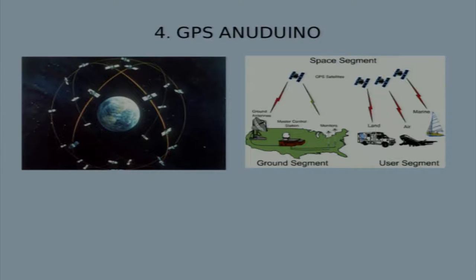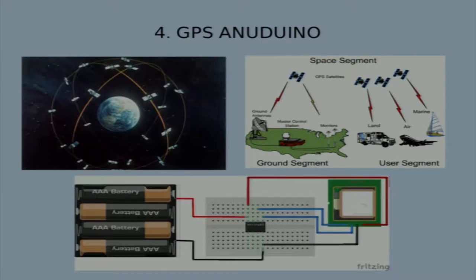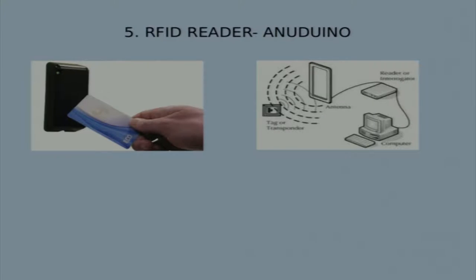GPS stands for Global Positioning System. GPS modules are used everywhere for navigation, distance measurements, and vehicle tracking. We tried to obtain the values of longitudes, latitudes, and place names, and display them using a Bluetooth module.